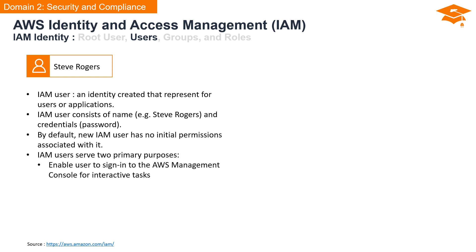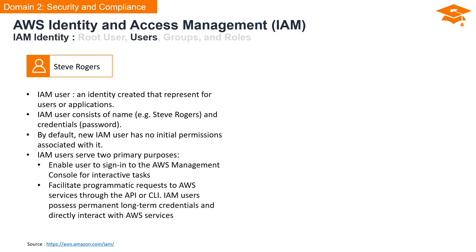IAM users serve two primary purposes. First, they enable users to sign into the AWS Management Console for interactive tasks, allowing human users to access AWS resources via the web-based console. Secondly, IAM users facilitate programmatic requests to AWS services through the API or CLI. IAM users possess permanent, long-term credentials that enable them to directly interact with AWS services programmatically.